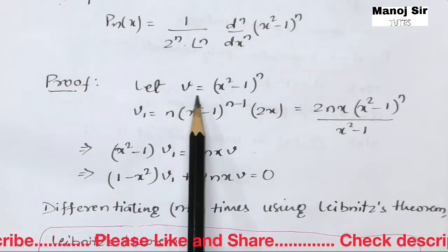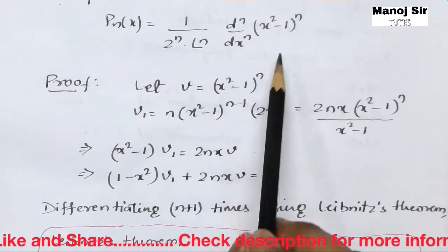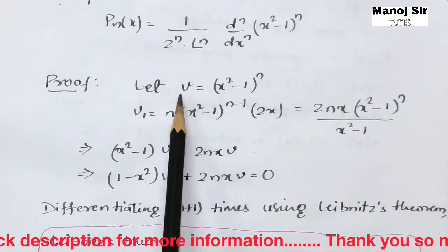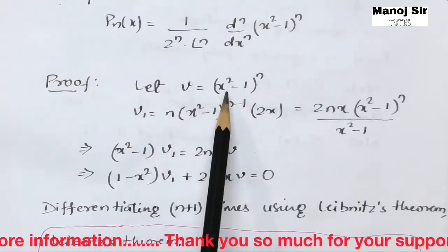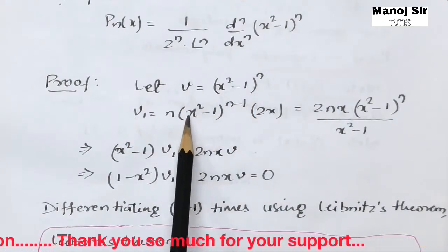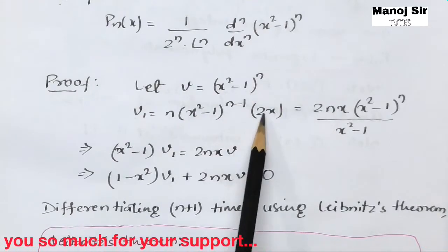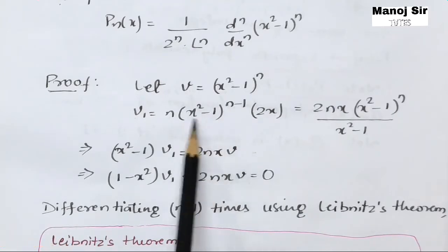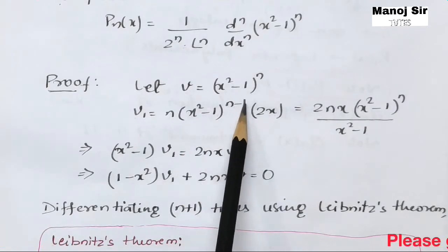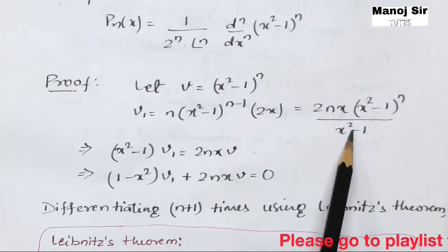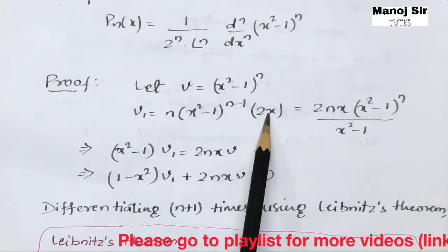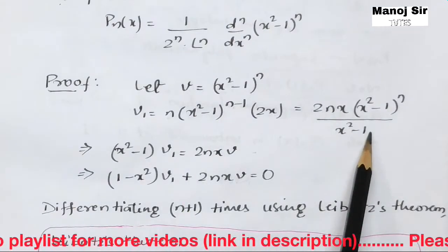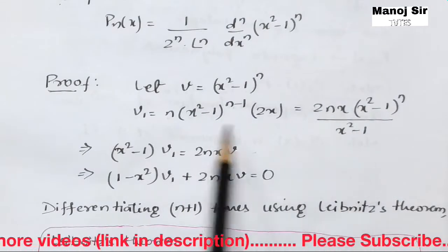To prove this, we suppose that V = (x²−1)^n. On differentiating this with respect to x we get V₁ = n·(x²−1)^(n−1)·2x. This can be rewritten as 2nx·(x²−1)^n upon (x²−1).